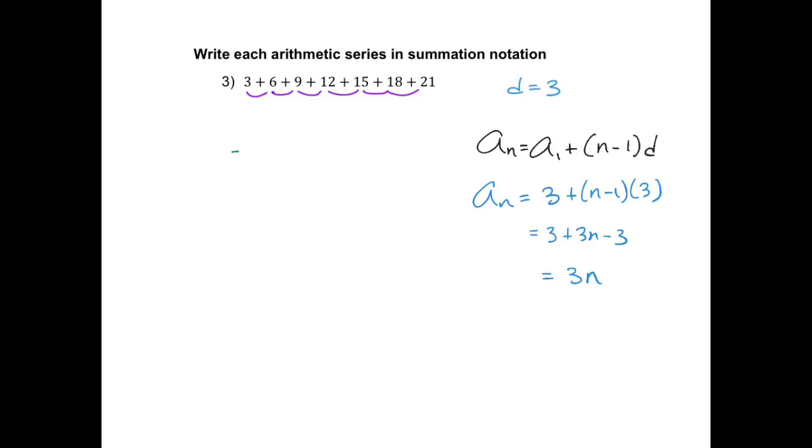So now I'm going to write the notation, the sigma n equals 1 because we're starting on the first one. In this case, it's easy because we just need to count. We don't need to use the formula to find n. So it's 1, 2, 3, 4, 5, 6, 7. So my top limit is 7 and 3n.